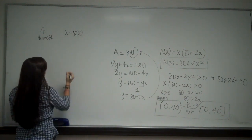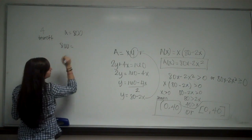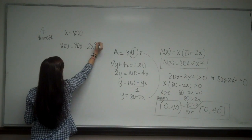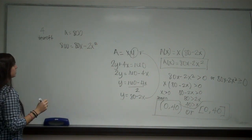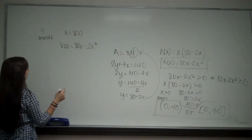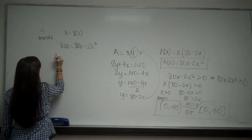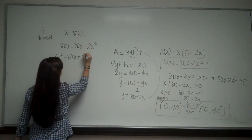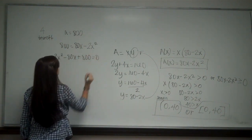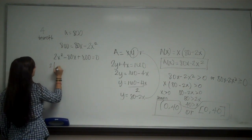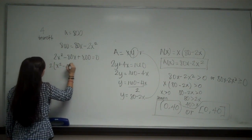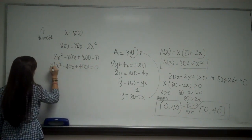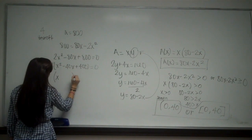So we have our equation. So 800 = 80x - 2x². So I'm going to set it all equal to one side. So I have 2x² - 80x + 800 = 0. Now I want to factor out a 2 to make it a little easier. So my 2 cancels off.